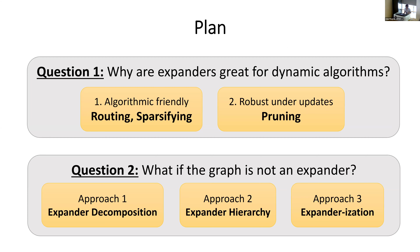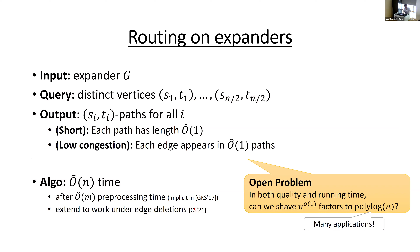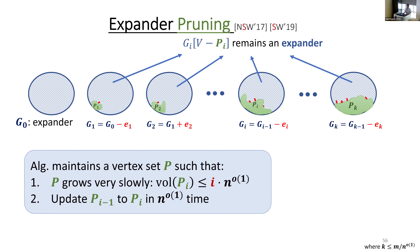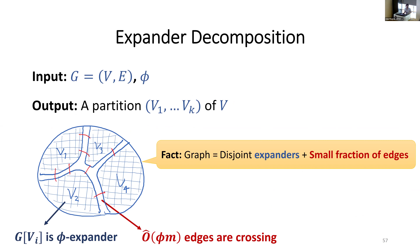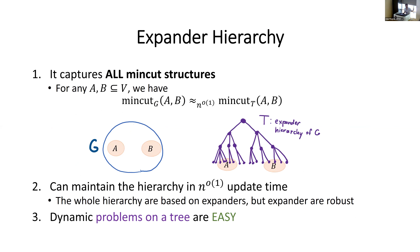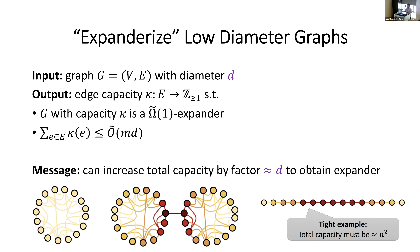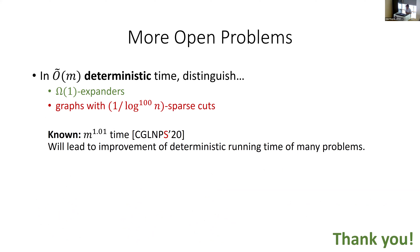To summarize the key tools: expanders are great for dynamic algorithms because many things are easy on expanders. Even if the graph is not an expander, there are tools — expander decomposition, expander hierarchy, and expanderization — to give you an expander to work with. Routing is fast on dynamic expanders; expanders are robust because of expander pruning; and if the graph has low diameter, there is a nice new way to make it an expander by increasing some capacity.